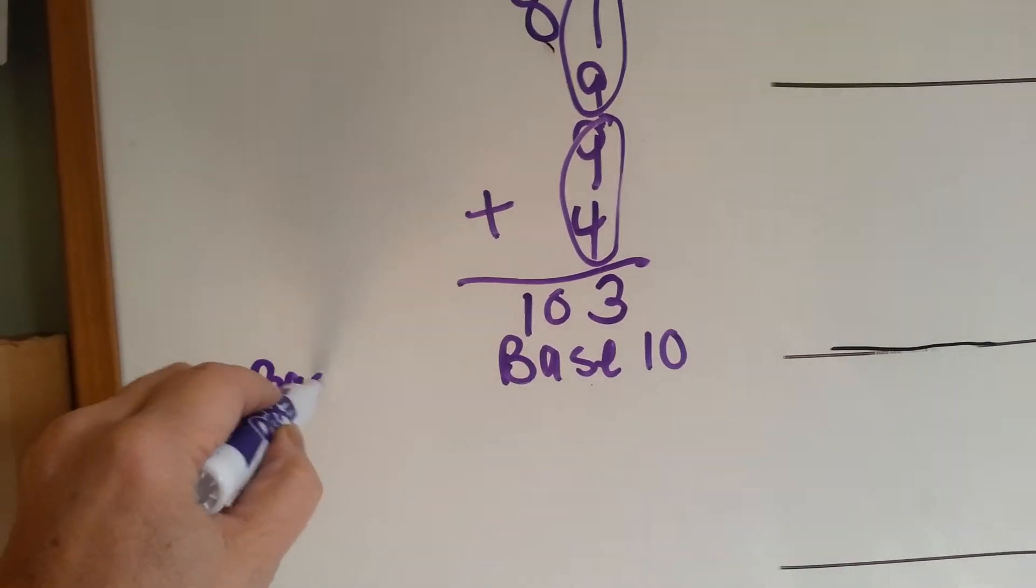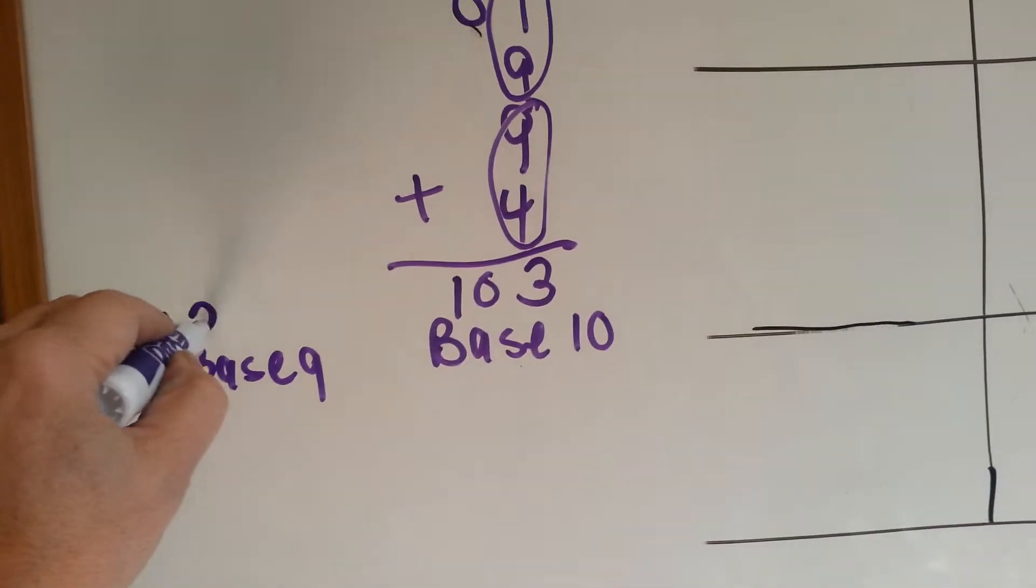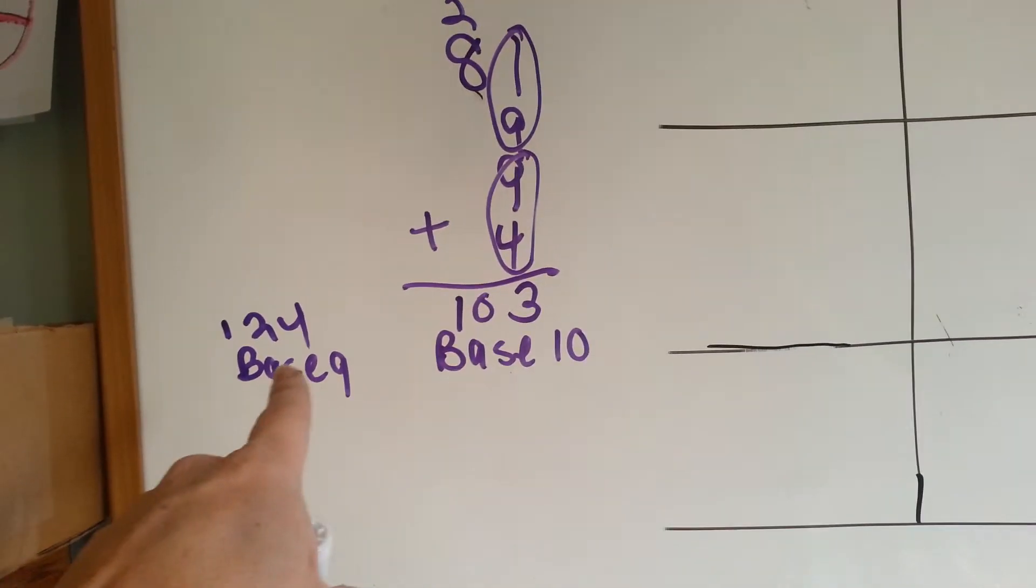But in base 9, it's 1 2 4. See how it's different?